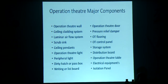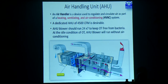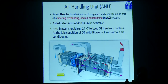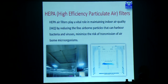The most important part is the air handling unit, which prevents infection. An AHU is a device used to regulate and circulate air as part of heating, ventilation, and air conditioning. A dedicated AHU is a minimum requirement for all theaters, with different specifications provided by vendors. The HEPA filter is another very important component to maintain indoor air quality by reducing fine airborne particles that can harbor bacteria and viruses, minimizing the risk of transmission of airborne microorganisms. HEPA filters are installed in the ceilings.